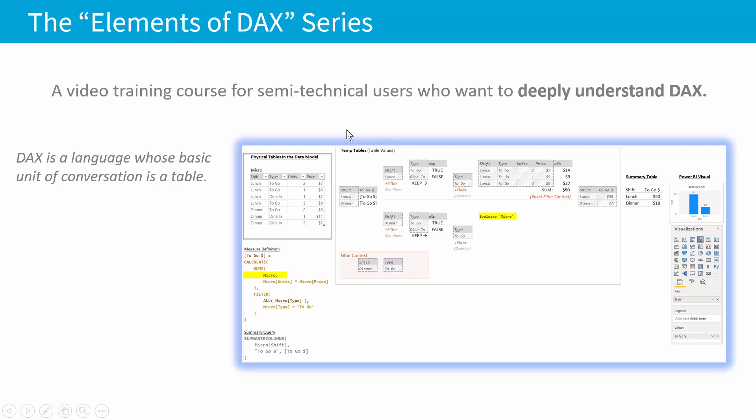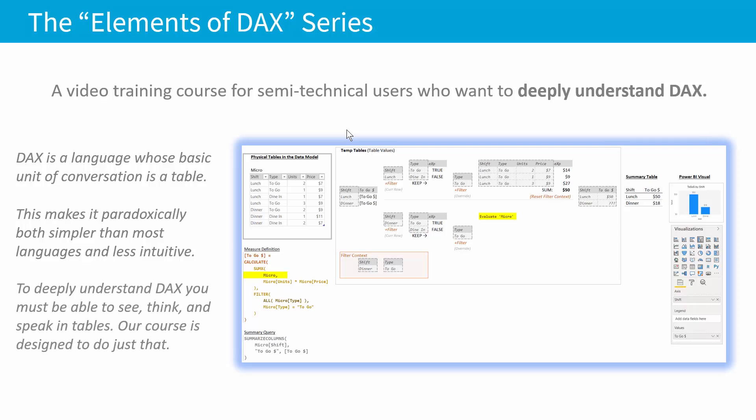So in DAX, everything is a table. And this creates a bit of a paradox because it means that the language is both simpler than most other languages, however it is also less intuitive. It would almost be easier to learn if it was less simple. So in order to deeply understand DAX, which is the goal of the series, you must be able to see, think, and speak in tables, and our course is designed to do exactly that.